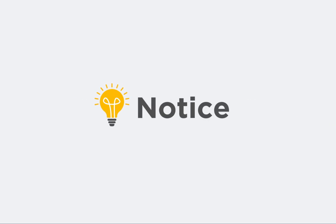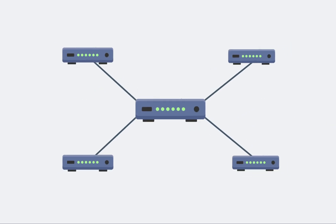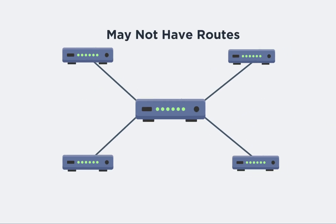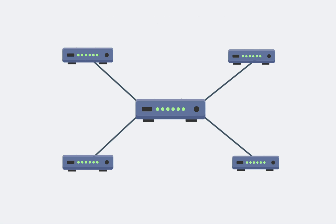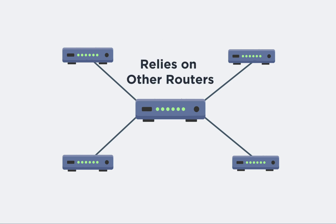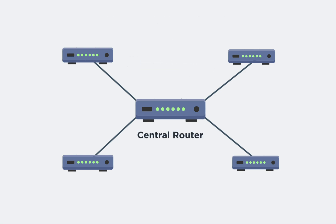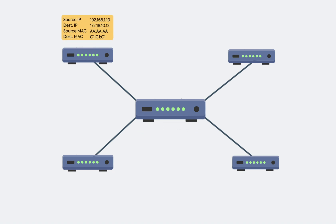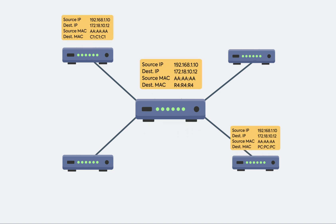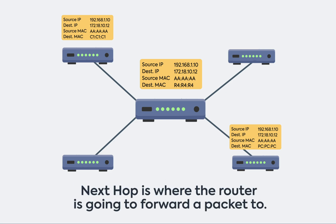Notice a few things. A router doesn't always know where to forward a packet and sometimes relies entirely on other routers — in this case, the center router. Second, the destination MAC address of the packet keeps changing at each hop; it is updated to the next-hop address at every step.